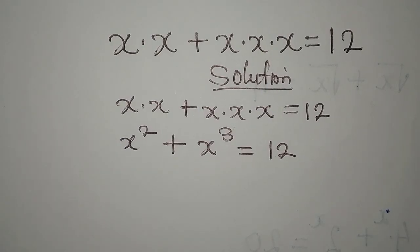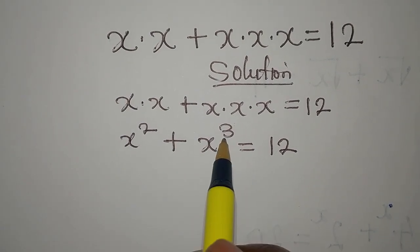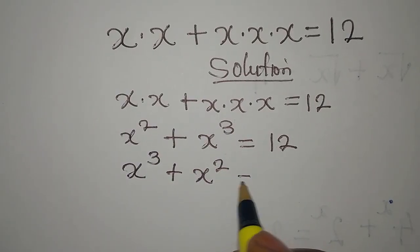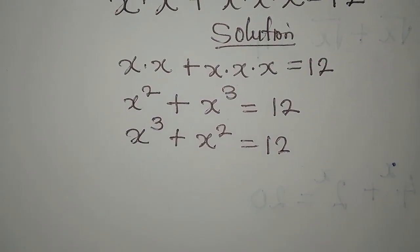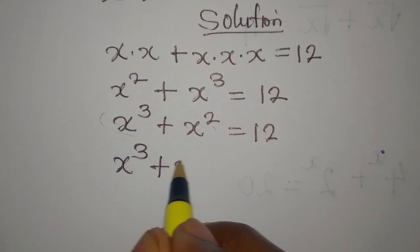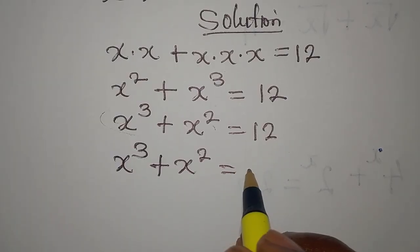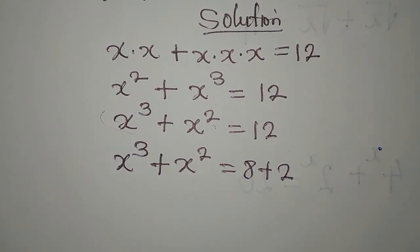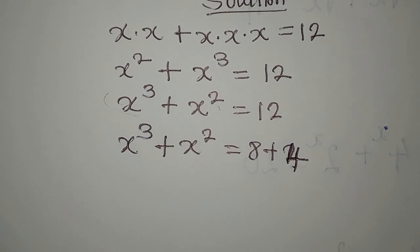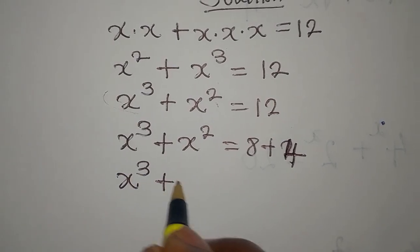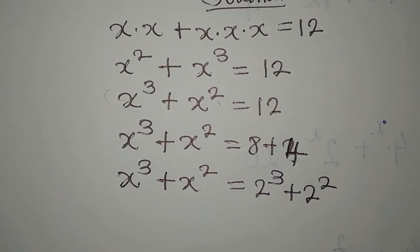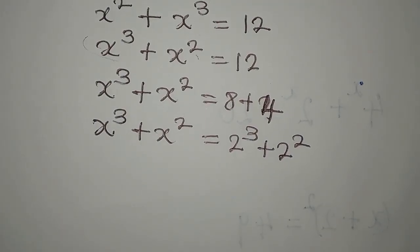We're expected to place the highest power first, so we reposition to get x to the power of 3 plus x squared equals 12. Now, 12 can be written as 8 plus 4 — that's 8 plus 4, not 10, because it's 12. So this becomes x³ + x² = 2³ + 2².